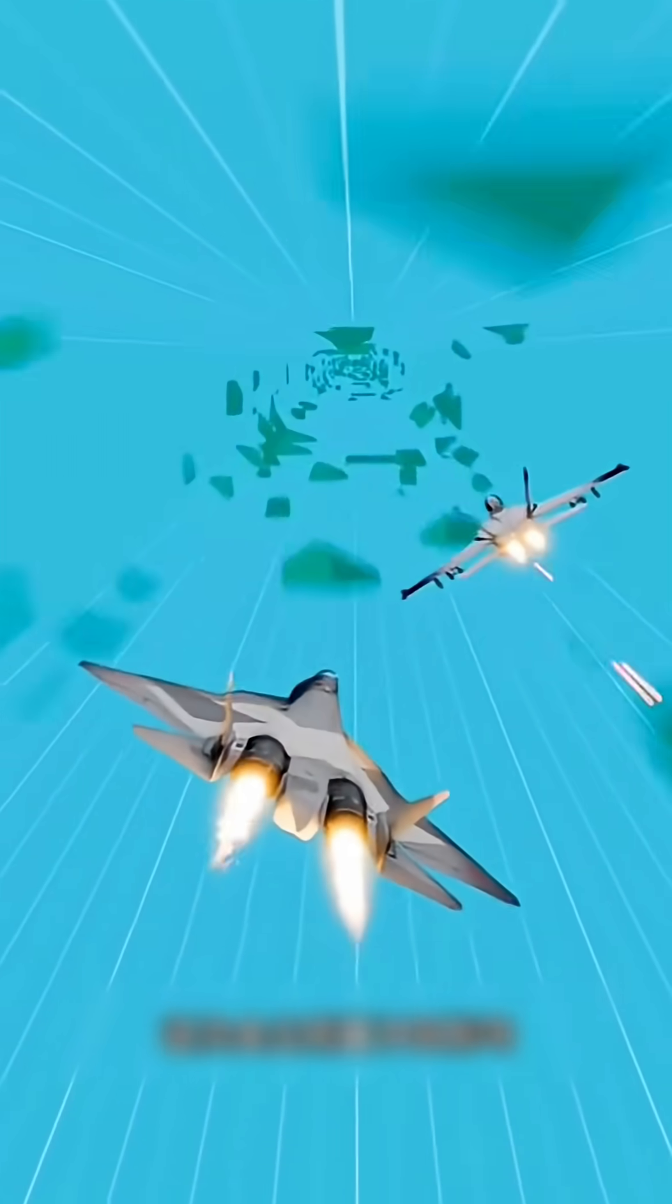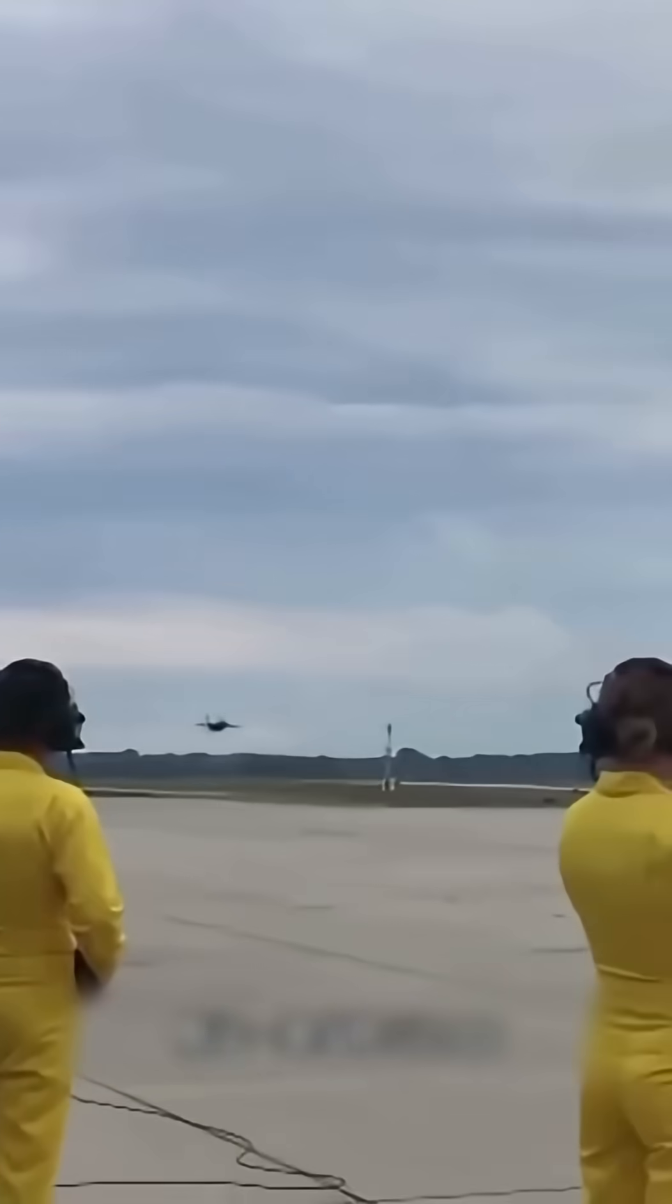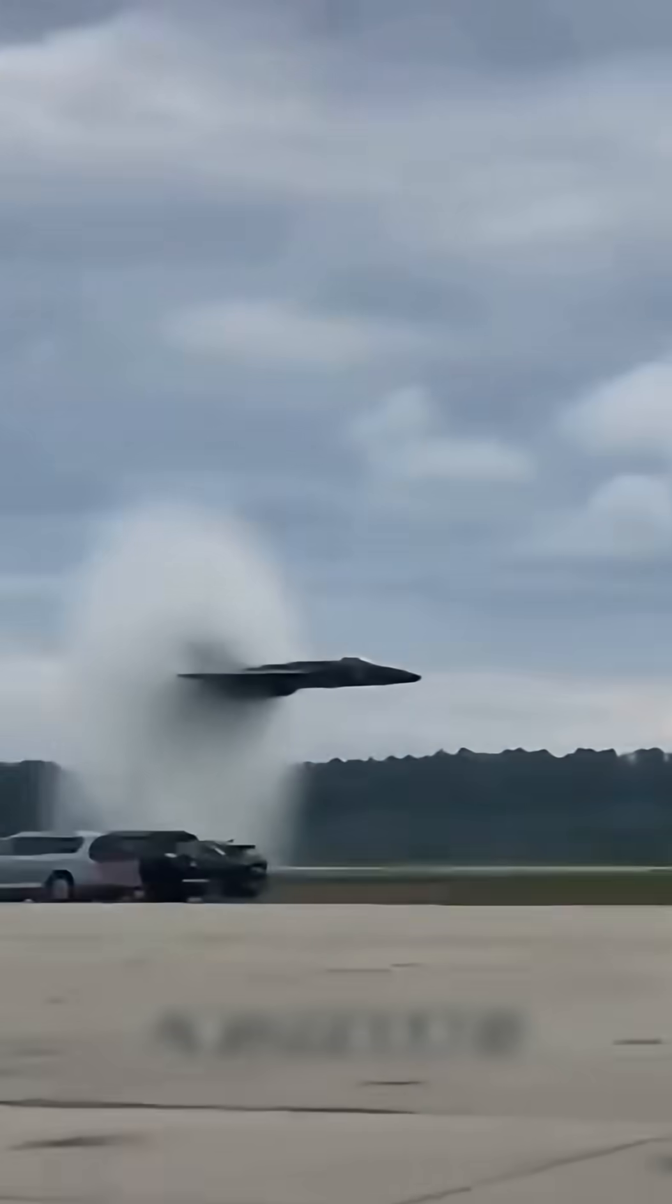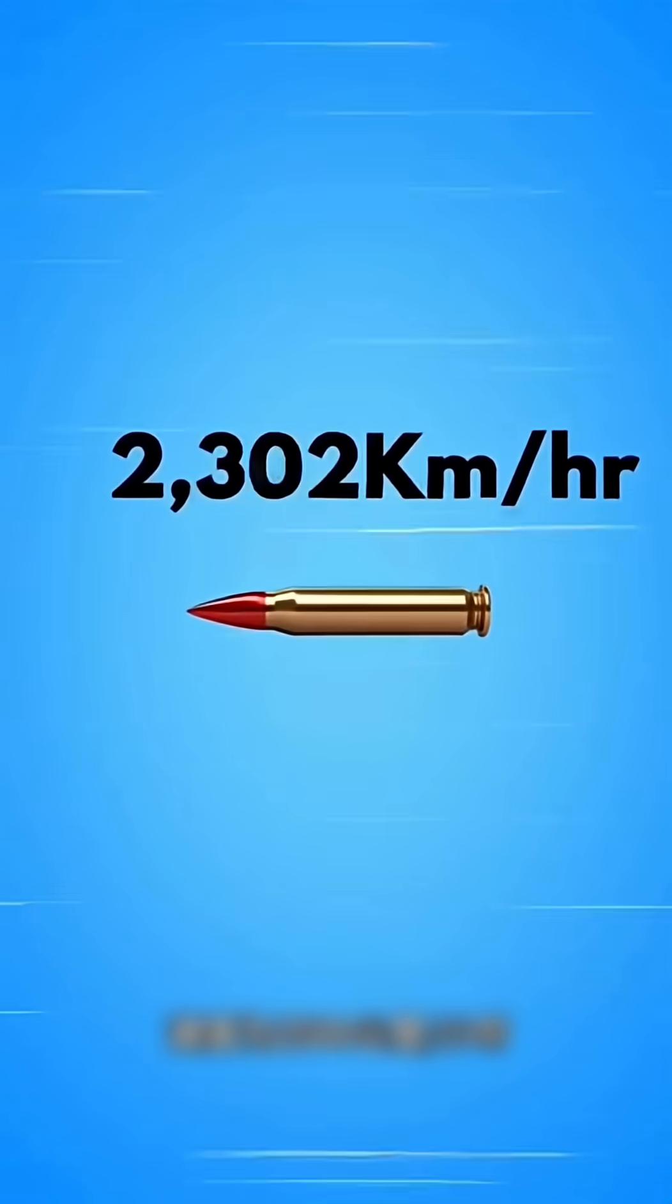Look again. A fighter jet fires multiple rounds backwards. Will it go straight to the target this time? Assume that a fighter plane is in supersonic flight at 2,000 kilometers per hour. The machine gun fires bullets at a speed of 2,500 kilometers per hour.